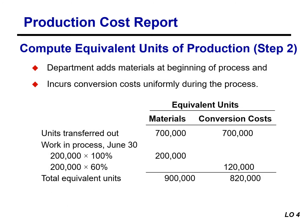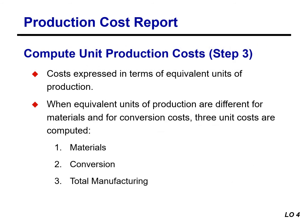Once the physical flow of units is established, Kellogg must measure the mixing department's productivity in terms of equivalent units. The mixing department adds materials at the beginning of the process and incurs conversion costs uniformly during the process. As a result, we need two computations for equivalent units — one for materials and one for conversion costs. The equivalent unit calculation was covered in the previous module. Now that we know the equivalent units of production, we can calculate the unit production cost, which is step three.